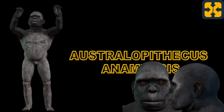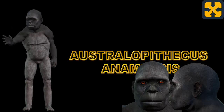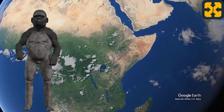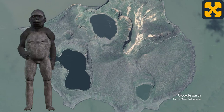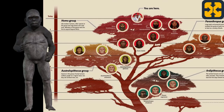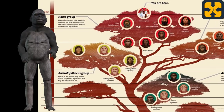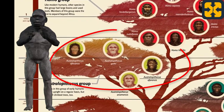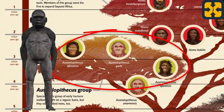Hello, I am Australopithecus anamensis. My name comes from the Turkana word anam, which means 'lake,' because I was found in Kanapoi, very close to Lake Turkana in Kenya. I was catalogued as a new species named Australopithecus — from australes meaning 'from the south' and pithikos meaning 'monkey.'